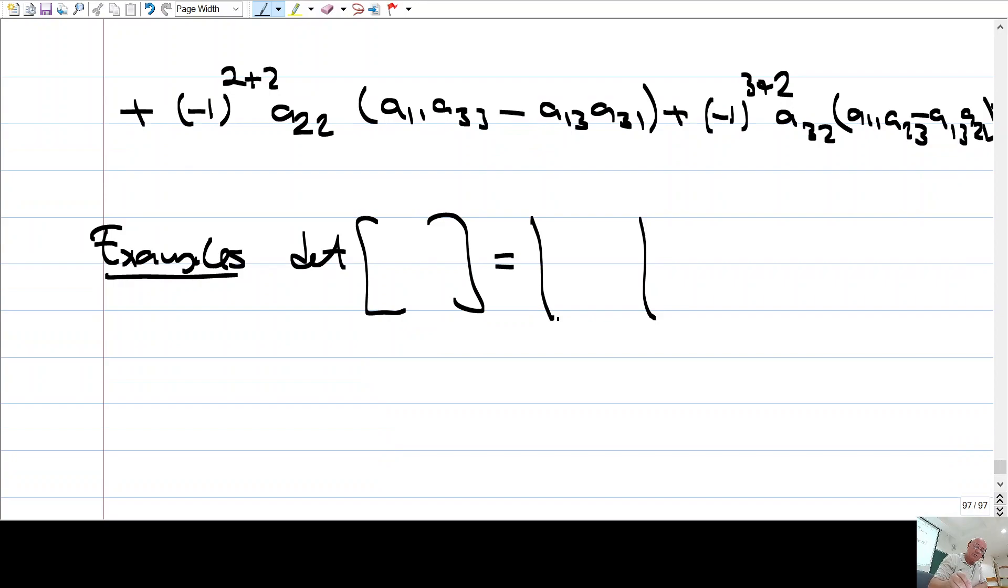So, if you just write a matrix like this, it means determinant of that matrix. For example, let's do this, 1, 4, minus 2, minus 3, 1, 0, 2, 2, minus 3.